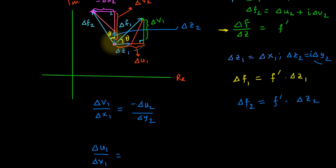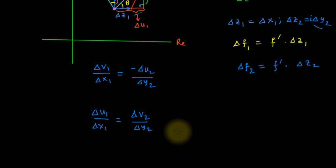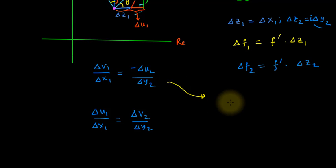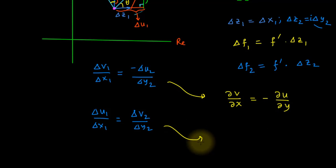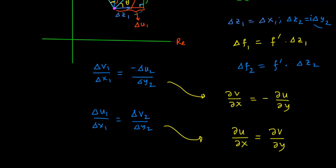Taking the limit as Δz → 0, from the first equation we get ∂v/∂x = −∂u/∂y, and from the second equation we get ∂u/∂x = ∂v/∂y. These are exactly the Cauchy-Riemann equations.